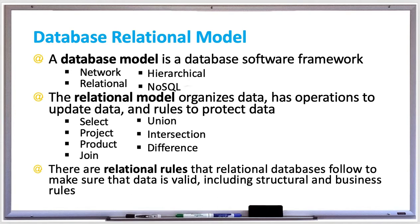There are rules that relational databases need to follow to make sure your data is valid. Integrity rules are logical constraints that ensure data is valid. Structural rules govern relational database data — for example, a primary key is a unique value with no duplicates in the column. Column names in the same table should be unique and there should be no duplicate rows, which we'll cover more when discussing normalization.